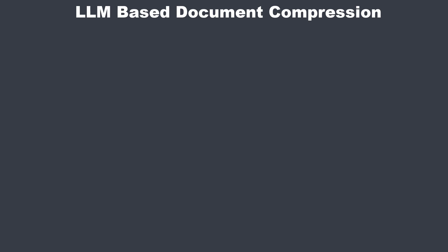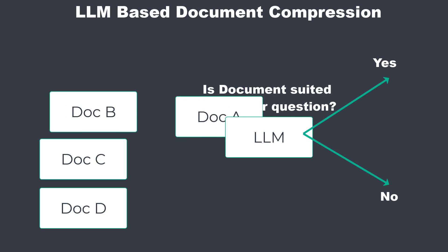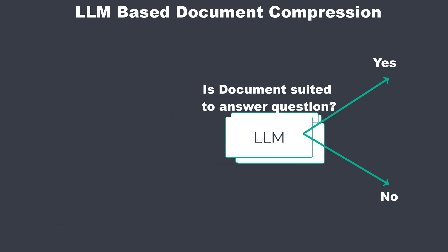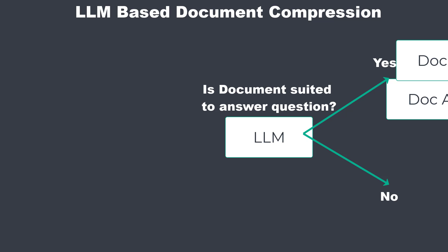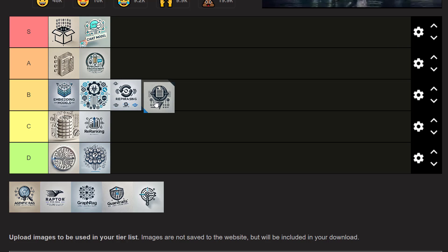A better approach is LLM-based document compression. You ask an LLM to evaluate whether a document is suited to answer the question, returning true or false. If the LLM evaluates it as false, you drop the document from the list. It's a great approach, but not A or S tier, because modern models can work pretty well with noise. Still quite useful — I'd put it in B tier.